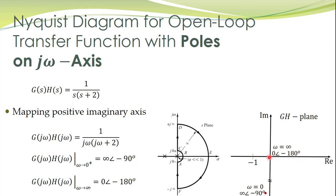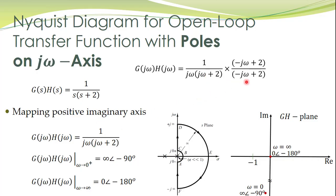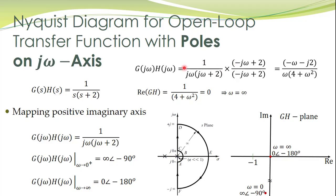We can determine a few more points — the crossings on the real axis and the imaginary axis. For that purpose, we simply rationalize it by multiplying with the complex conjugate. After multiplication, substituting the real part equal to 0 gives omega equal to infinity. We have already learned the mapping of omega equal to infinity — that maps to the origin. To find the crossing on the real axis, substitute the imaginary part equal to 0, and you again get omega equal to infinity. So this gives us the complete mapping for the positive imaginary axis.